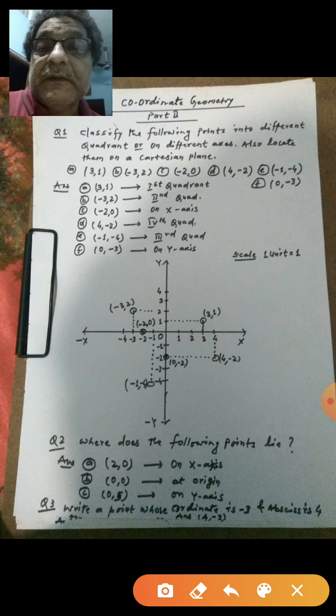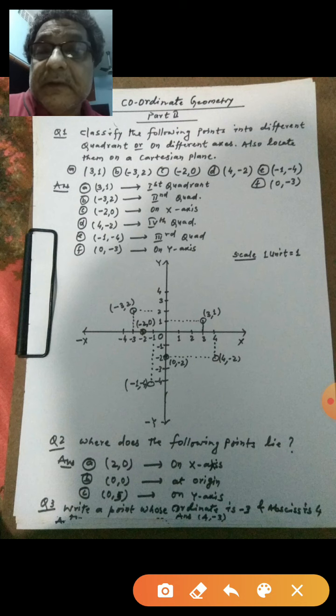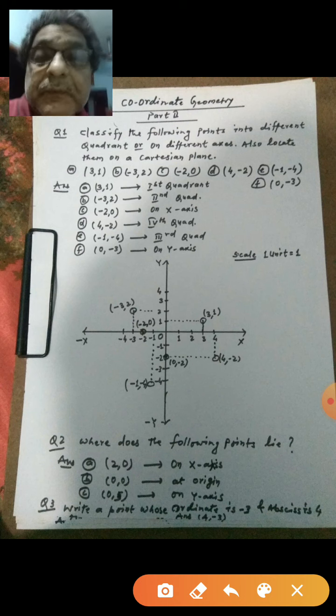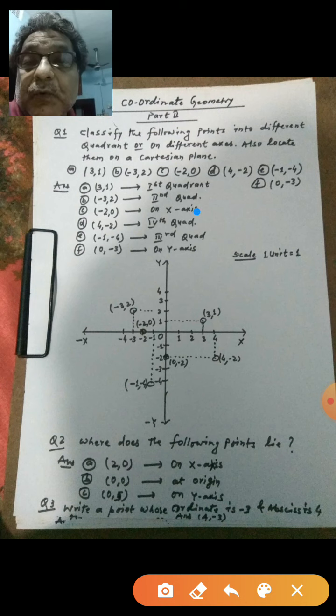So students, here you see two works have been asked to perform in question one. First is to classify the given points into related quadrant where it does belong, and another work is to locate them on a Cartesian plane, on a graph paper. So one by one I am taking the first point is 3 comma 1.